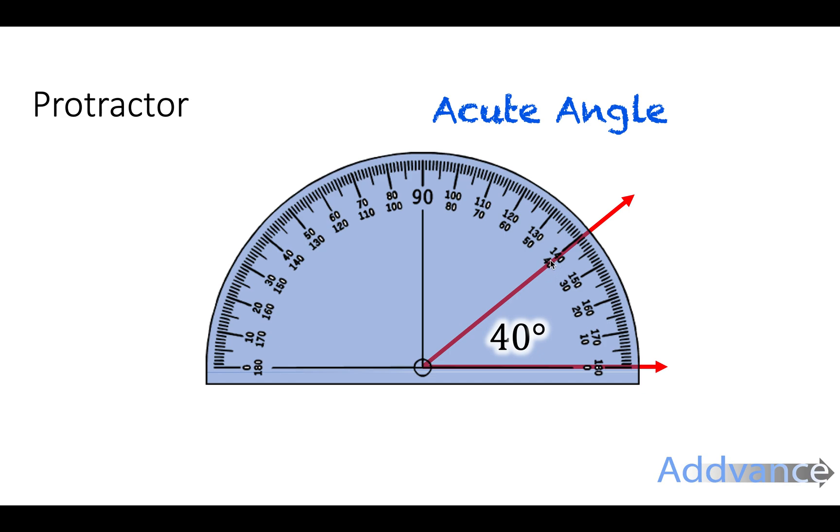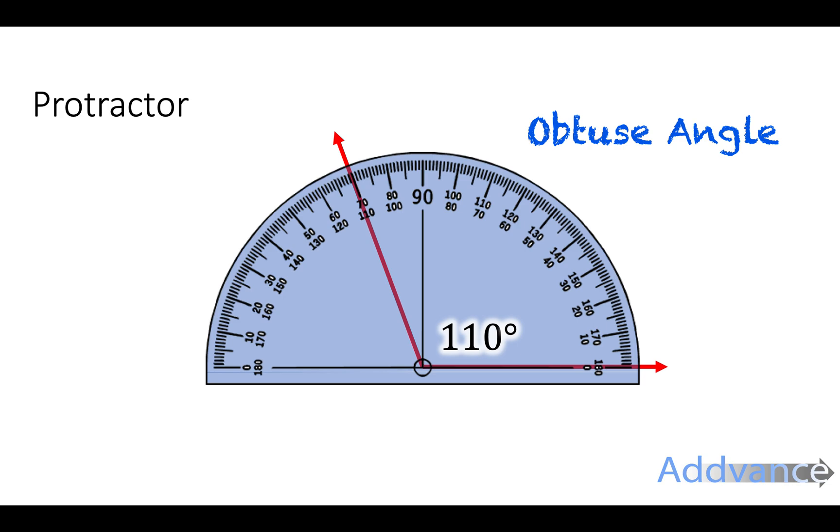So there are the numbers 40 and 140 here. We are measuring from the 0 here so we use the inside scale and not the outside scale. So this is a 40 degree angle. This is a 110 degree angle and that's an obtuse angle.